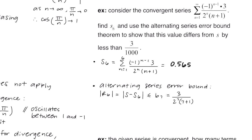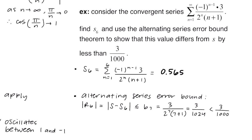We set up the alternating series error bound: r sub 6 equals the total sum minus the 6th partial sum, and this is less than or equal to b sub 7, so we take 7 and plug it in for n in the non-alternating part. So we have 3 over 2 to the 7th times the quantity 7 plus 1, which equals 3 over 1024. This fraction is less than 3 over 1000 because we're dividing by more, so it checks out.